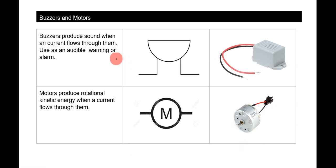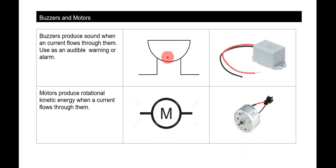Buzzers produce sound when a current flows through them and are used as audible warnings or alarms. For example, pressing a doorbell button closes the circuit, electricity runs through the buzzer, and it chimes to indicate someone is at the door. A buzzer converts electrical energy into sound energy.